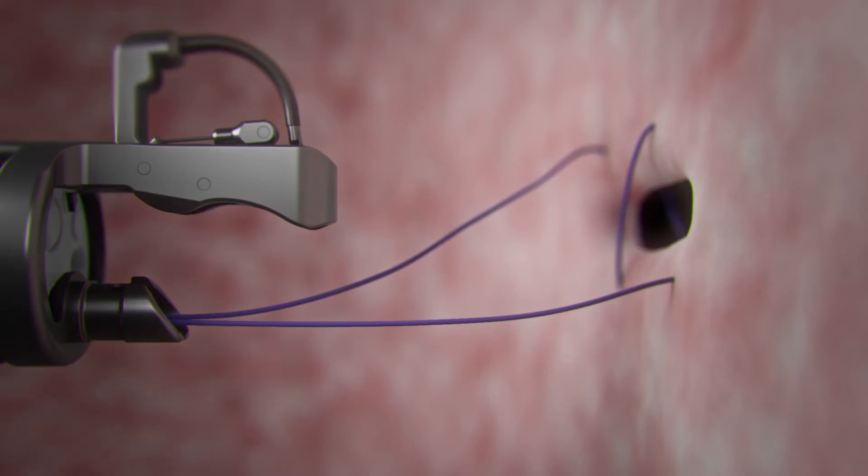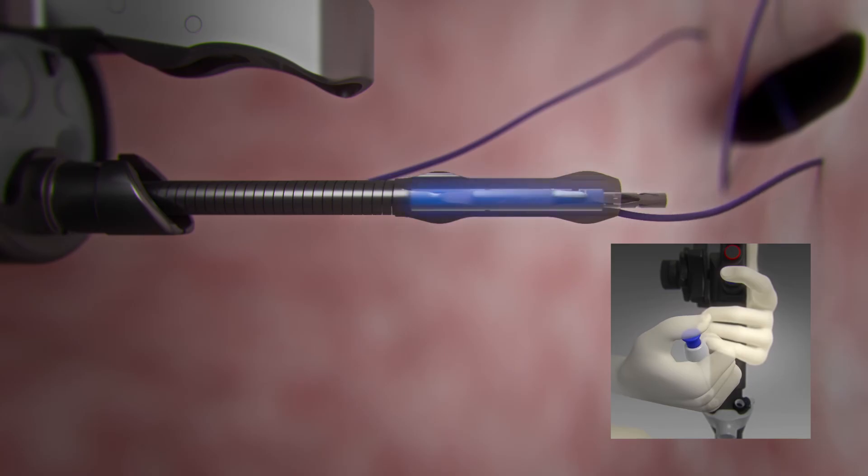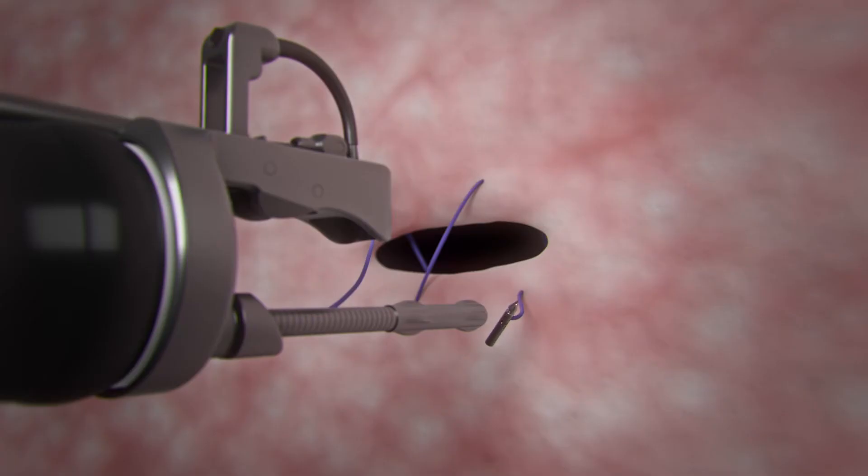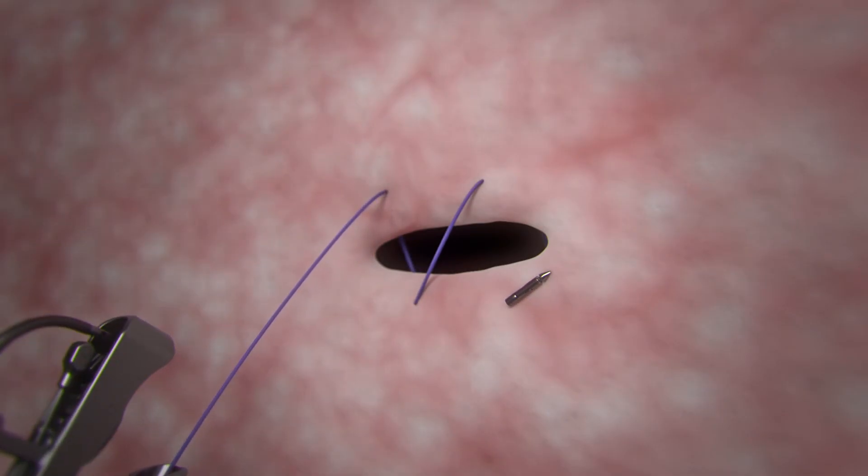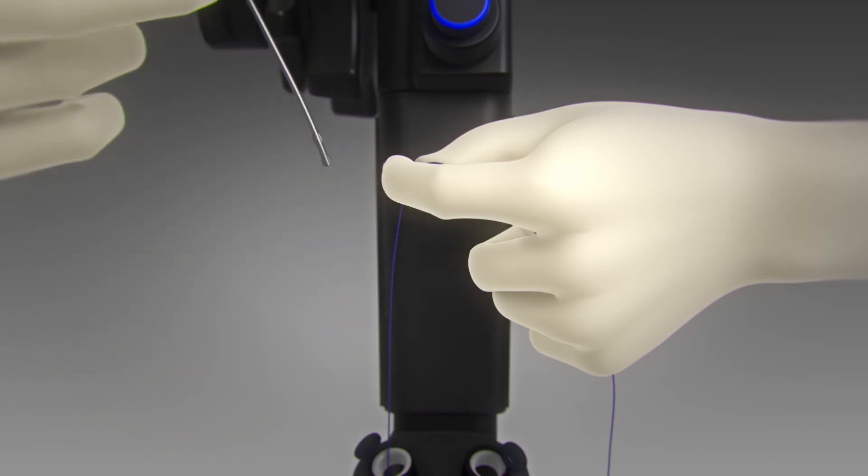To prepare for cinching, extend the anchor exchange catheter approximately 3 centimeters past the end cap. Press the blue button and pull back on the anchor exchange to release the anchor. Remove the anchor exchange catheter from the 3.7 millimeter scope channel, leaving the suture in place.